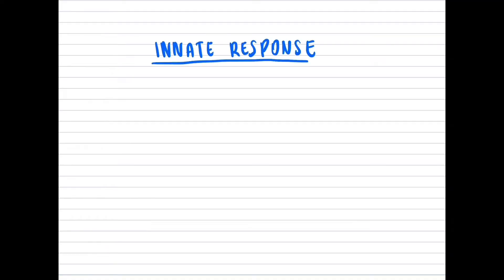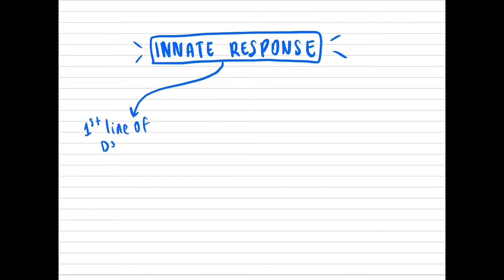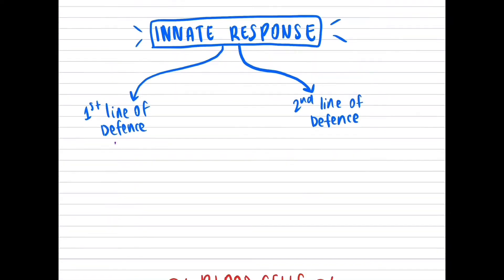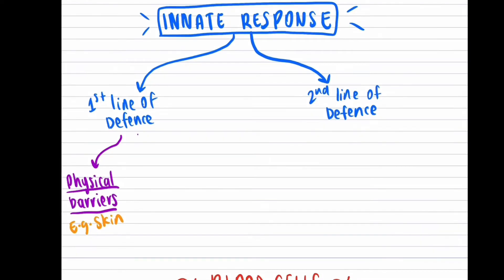Firstly, the first line of defense will attempt to block and prevent the pathogen from entering the body using physical and chemical barriers. Physical barriers include the skin, which protects the vital organs and internal systems from making direct contact with the pathogen. Skin is also well supplied with blood for early access to white blood cells, red blood cells, and platelets.